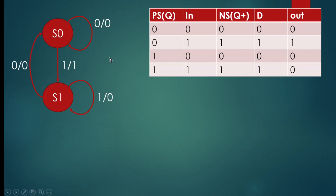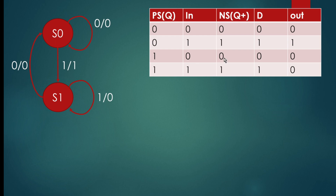From this state machine it is very easy to realize its hardware. We need to draw its excitation table. In the excitation table we give present state, input, and next state - the excitation table describes how the inputs need to be excited so that we can get the next state from the present state.